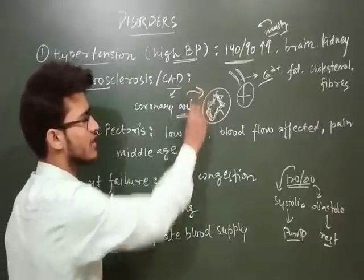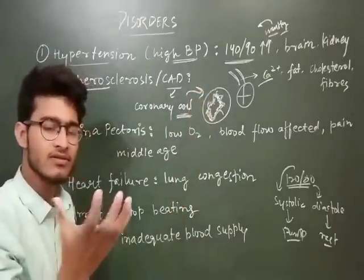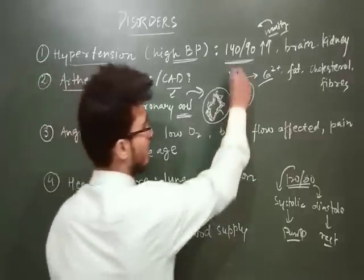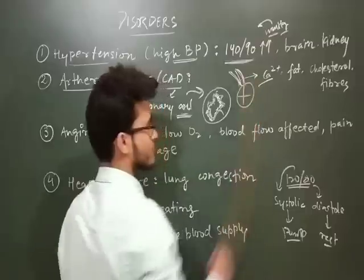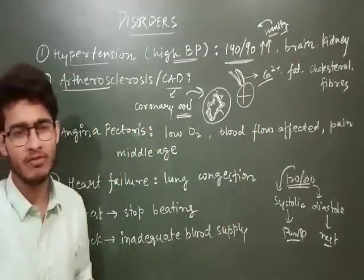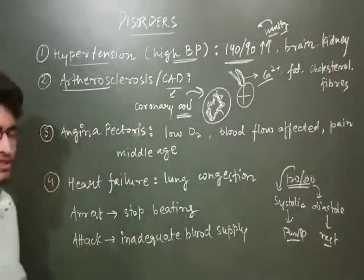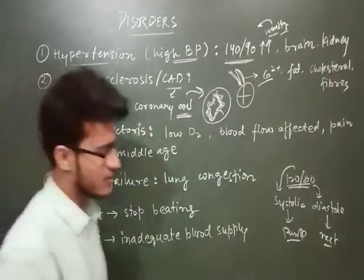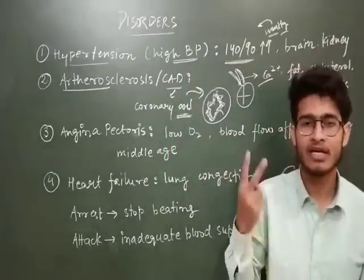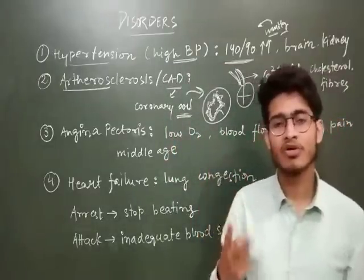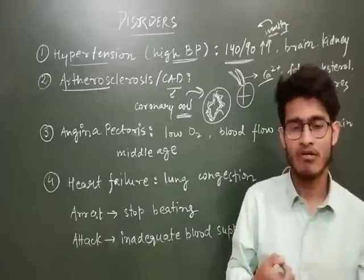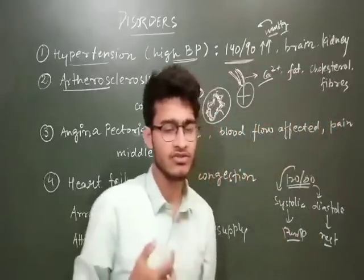So we have covered two diseases. First, Hypertension — blood pressure more than 140/90 mmHg. Second, Atherosclerosis, also known as CAD — Coronary Artery Disease — where the vessels get blocked and the lumen becomes small due to the deposition of calcium, fats, cholesterol, and fibrous tissues.